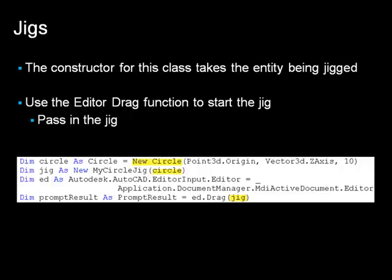Once we call the drag method, several things will happen. First, the user drag movement is obtained, and this movement is interpreted as a distance, angle, or point. These values are then used to update the entity's data, and the entity's WorldDraw method is called to redraw the entity on the screen. When all the desired properties of the entity are gathered by jigging, you can append the entity to the drawing.